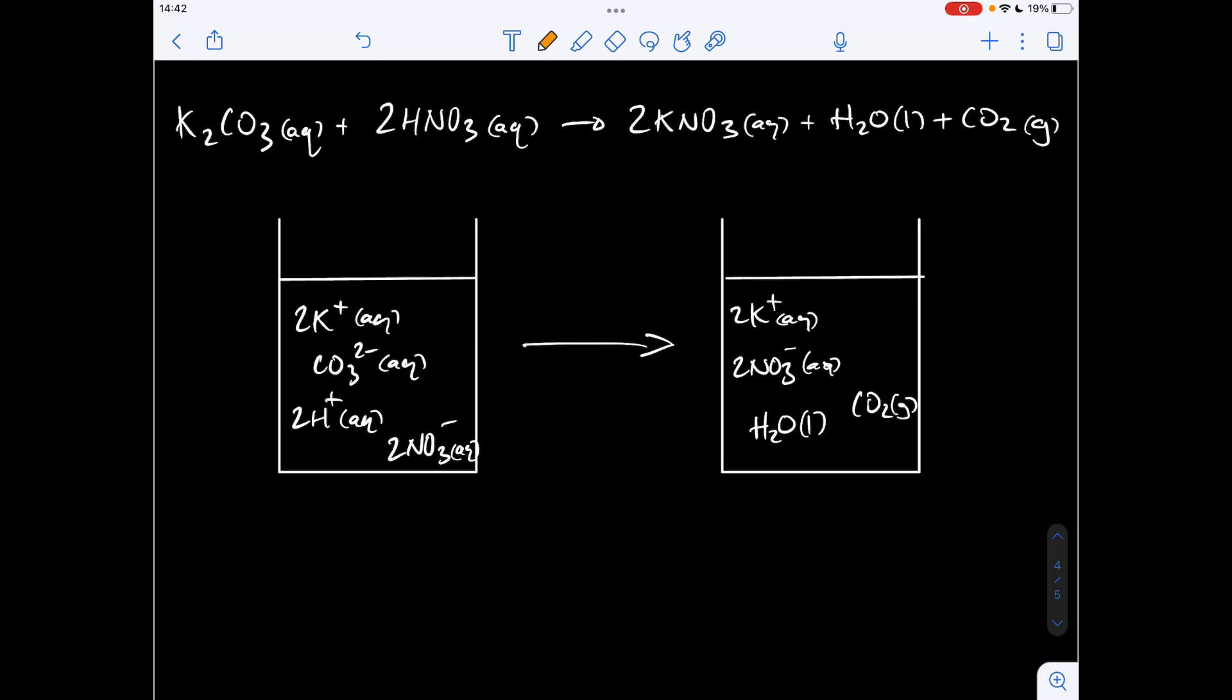Cancelling out the spectator ions, two K pluses, two K pluses and two nitrate. So the ionic equation is going to be the reaction between a carbonate ion aqueous and two H plus ions aqueous, making H2O liquid and CO2 gas.